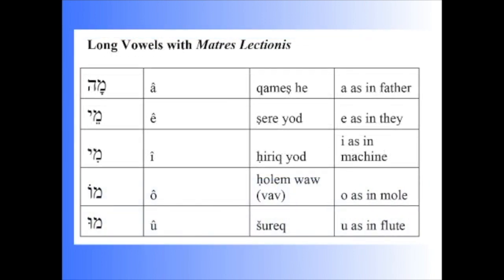The long vowels with Matris Lectionis consist of a Qamats He, with an A as in 'father,' pronounced exactly the same as the Qamats, and it has an A with a little upside-down V in transliteration. The Tsere-Yod is a combination of the Tsere followed by a Yod. These are two different marks but they're pronounced the same as one vowel, an A sound, A as in 'they.'